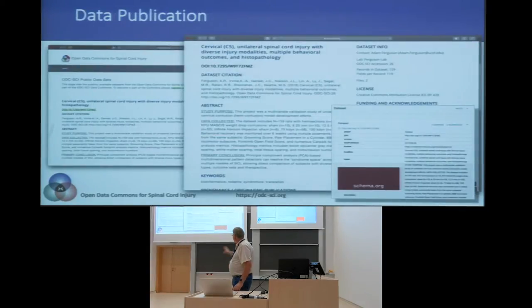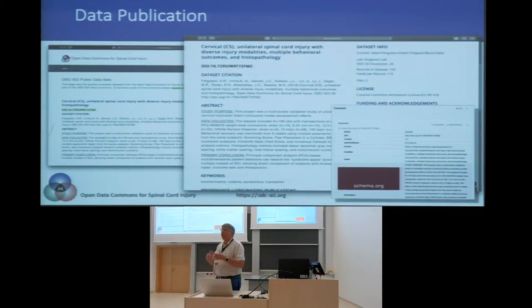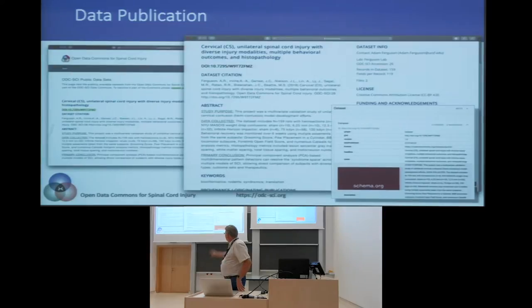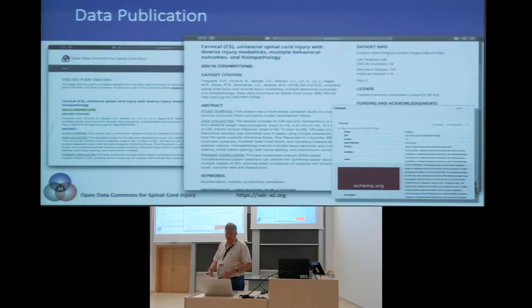The last part is the data publication piece. Once a dataset is published through the system, it gets its DOI, and we have schema.org metadata — which you see on the bottom right — trying to make sure the dataset meets some of the basic FAIR principles we've been talking about.